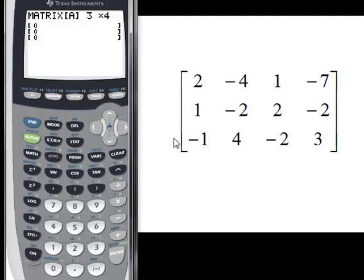And now we are going to enter basically like we have it: two, negative four, one, negative seven, one, negative two, two, negative two, negative one, four, negative two, and three.